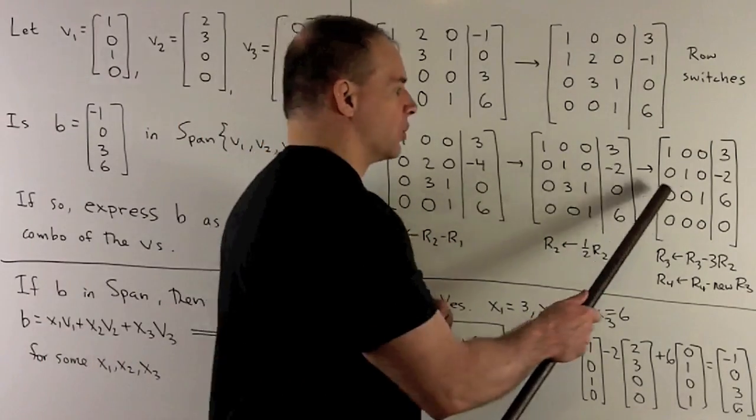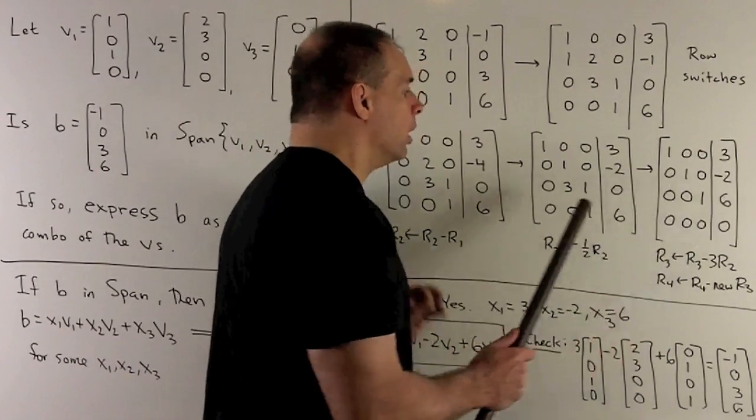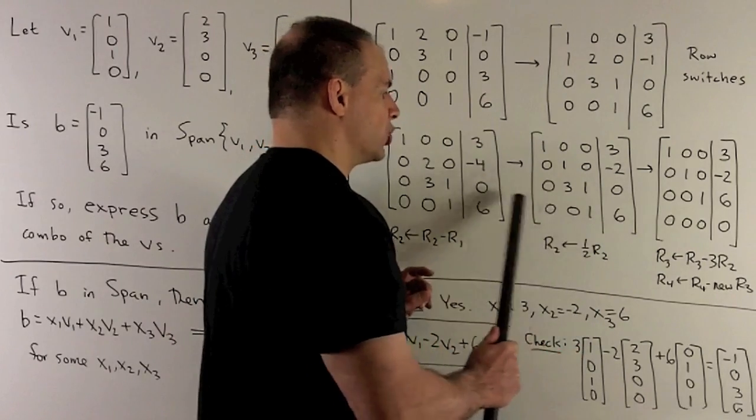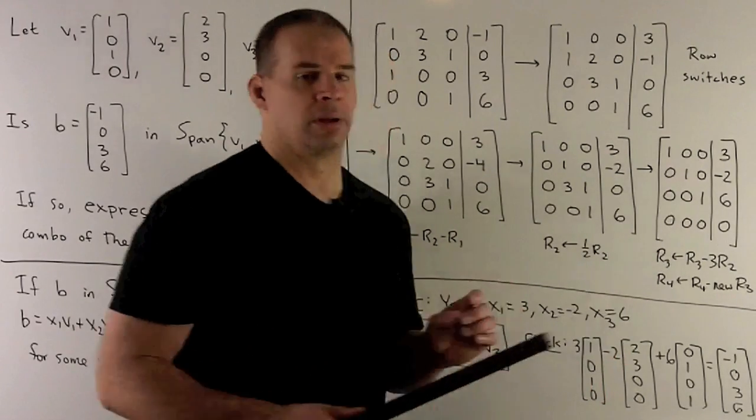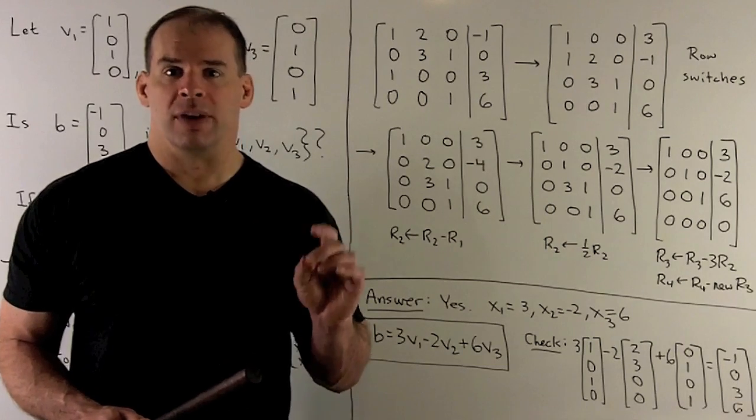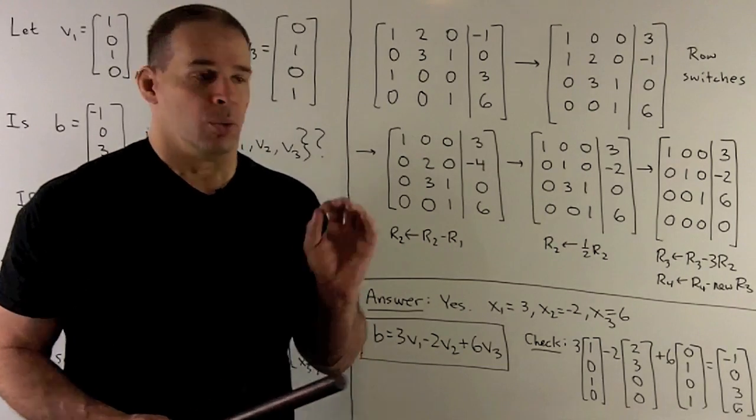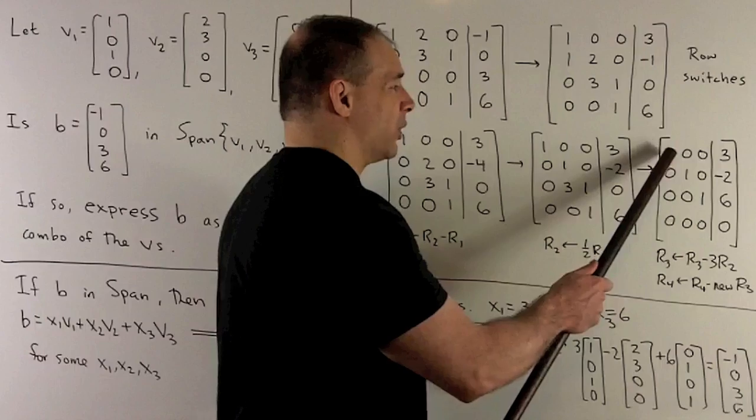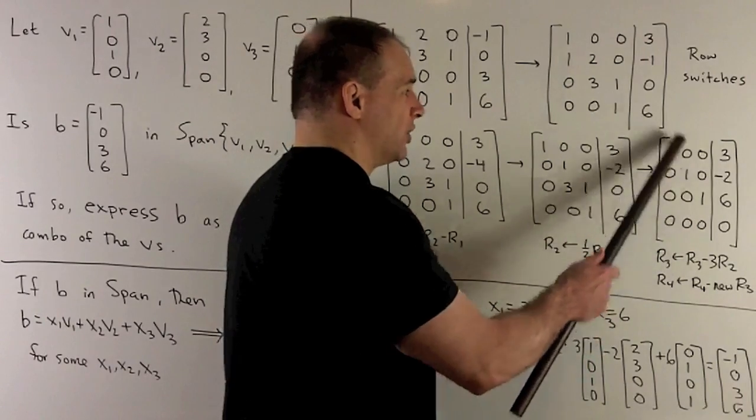When we do that, we're going to get the row [0, 0, 1, 6]. And we have [0, 0, 1, 6] for row 4, so we can just remove it. Now, if you note, we have better than row echelon form, we have reduced row echelon form, which means for our pivots, not only do we have zeros below, we have zeros above.